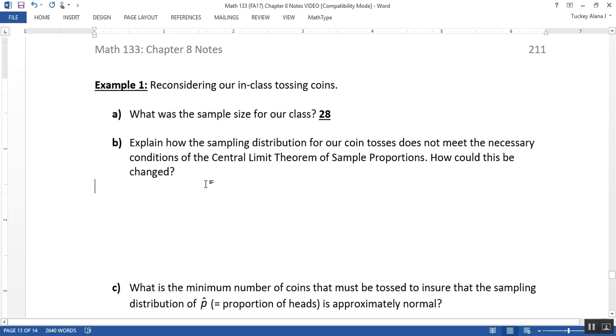So it does not necessarily meet the conditions. So condition number one is random, and that is definitely met. So we met that condition of randomness with no problem, because coins are random. So the coin tosses were random, and as long as people really were honest about the results, which we have no reason to believe they wouldn't be, then we're fine.